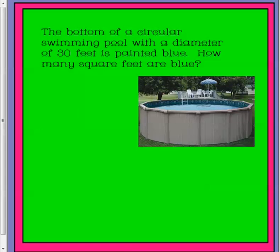Let's look at a real-world situation. We've got a swimming pool with a diameter of 30 feet that's painted blue. So how many square feet are blue? Our formula, though, doesn't allow us to plug in diameter because it's radius.